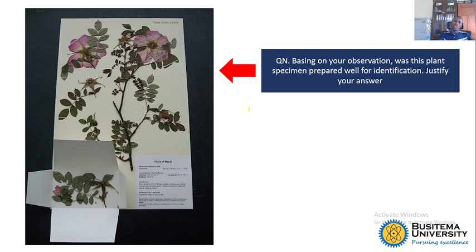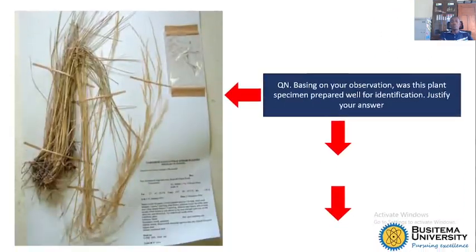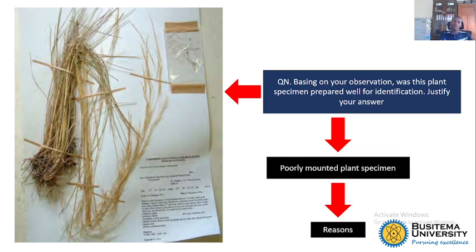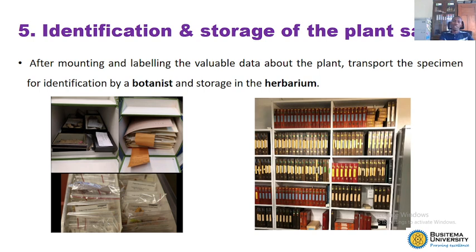Based on your observation of this plant, the specimen was prepared well — as you can see. This other one was poorly prepared, which makes identification more difficult and challenging for the botanist.